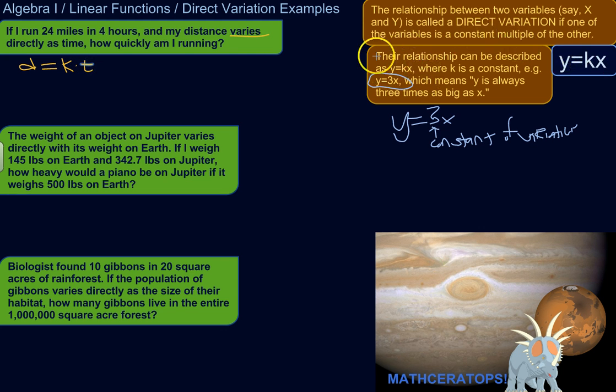So distance varies directly as time. I could say distance is equal to some constant times time. So I have an equation like this, just applying it to this real example where I'm not dealing with y and x, which is so abstract. I'm dealing with distance and time. But if I were to graph this, I would put distance on the y-axis, put miles over here, and time here on the x-axis.